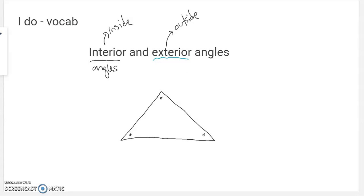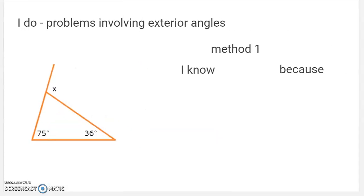An exterior angle of a triangle would be if you took a side and you extended it past the triangle, this would be an exterior angle, and this would be an exterior angle. They're the angles outside of the triangle if you extend the side. Or I could extend a different side. If we extended this side, this would be an exterior angle, and this would be an exterior angle. They're outside the triangle on the extension of the side. So that's what I'm going to be talking about today is angles like those that are called exterior angles.